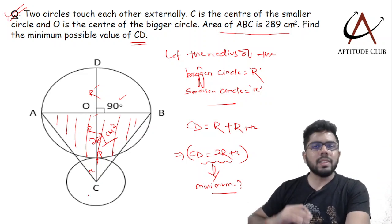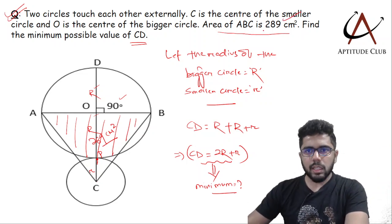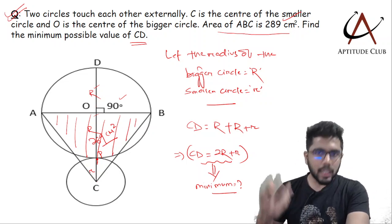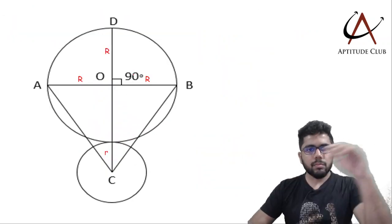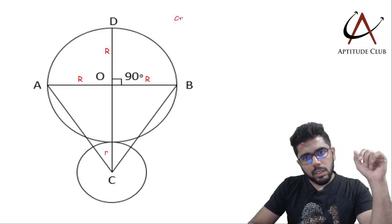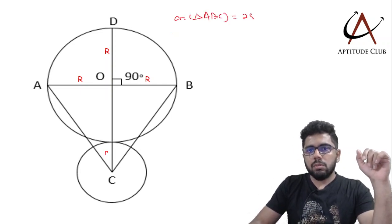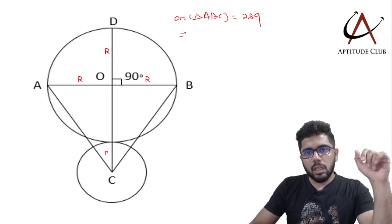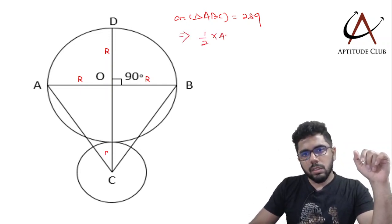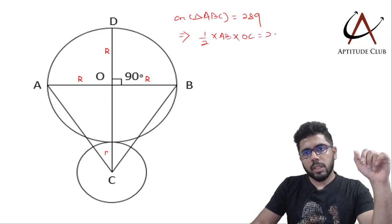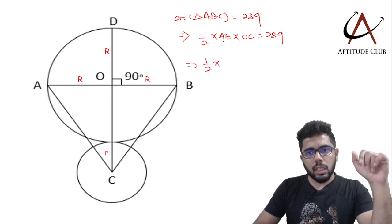So what we'll do is - naturally once we are given the area and this is 90 degrees, we will be tempted to use half base times height. Area of triangle ABC equals 289. How do I calculate area? Half times the base AB times the height OC equals 289. So half - how much is AB? AB is R plus R, so AB equals 2R.